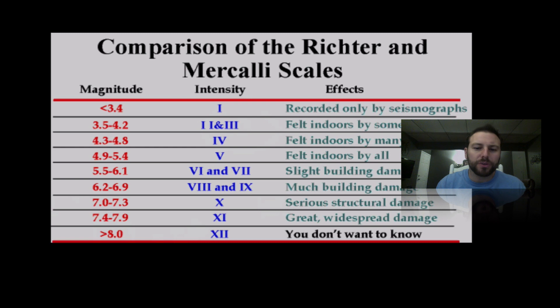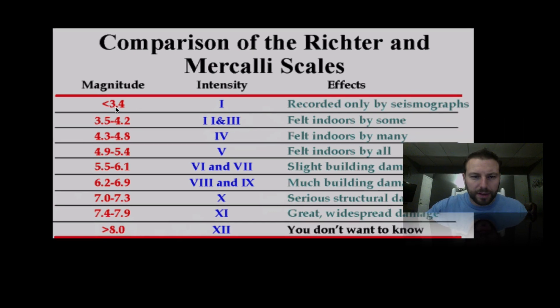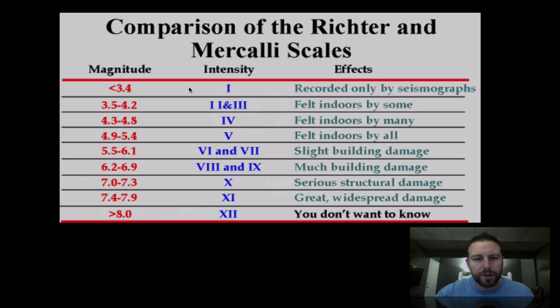These are just looking at the two scales. If you wanted to compare them side by side, you can see here that basically anything less than a 3.4 on a magnitude Richter scale is going to be about a one of an intensity on the Mercalli. And going through, you can check them out for yourself.